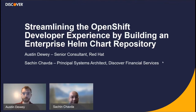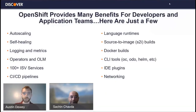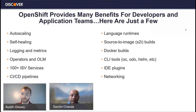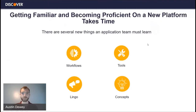OpenShift provides many benefits for developers and application teams, such as application auto-scaling, self-healing applications, and S2I (Source-to-Image) to enable easy builds within the cluster. There are all kinds of benefits and reasons to adopt OpenShift, but of course anytime you move to a new platform there's going to be some time it takes to ramp up. It takes time to become proficient on a new platform. Here are four high-level reasons: one is new workflows — new ways of doing things in the platform.